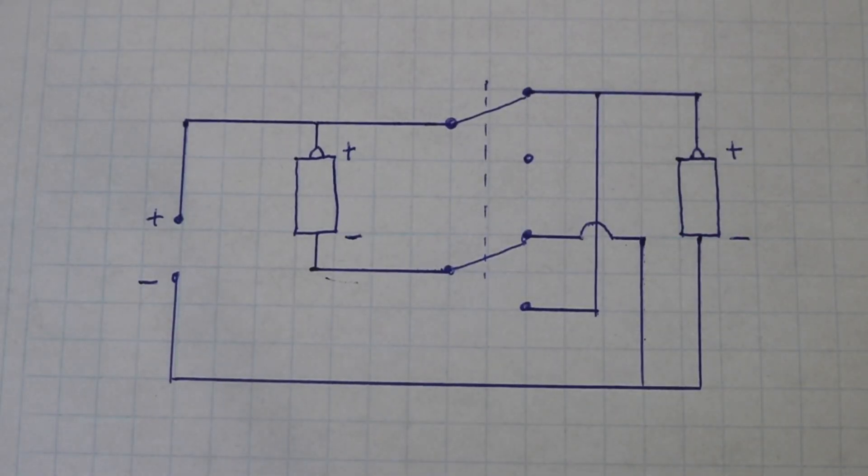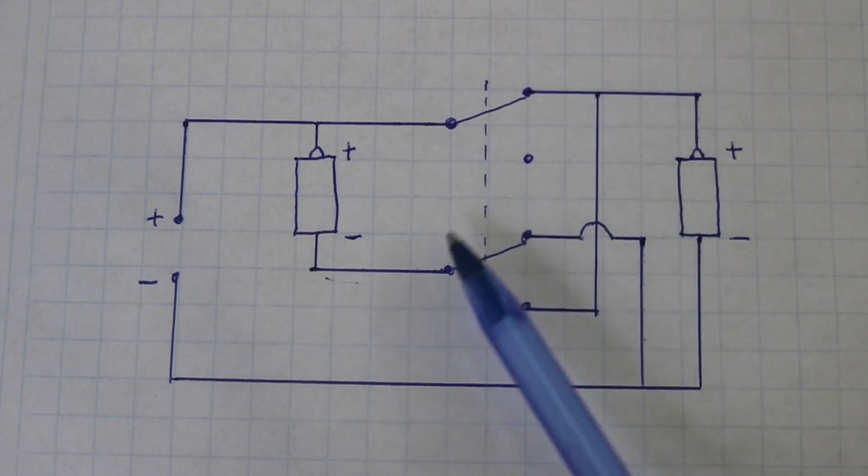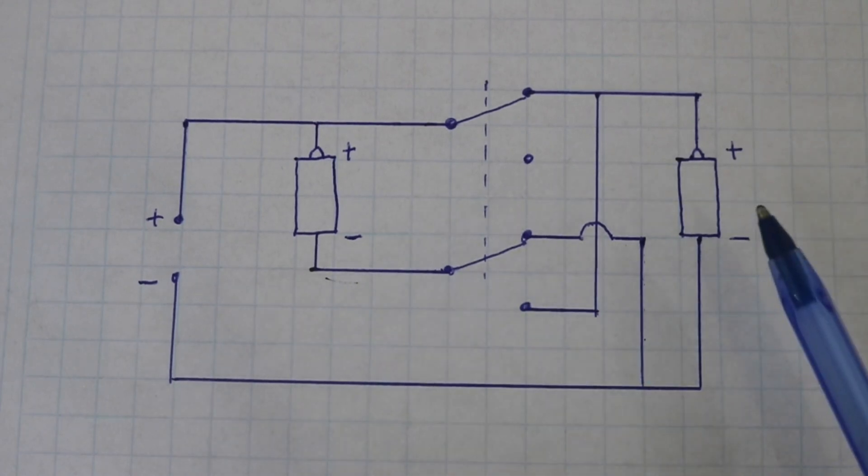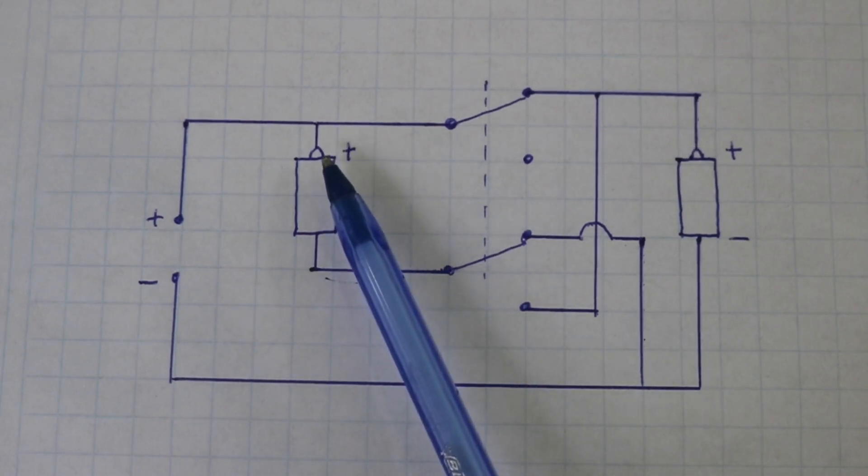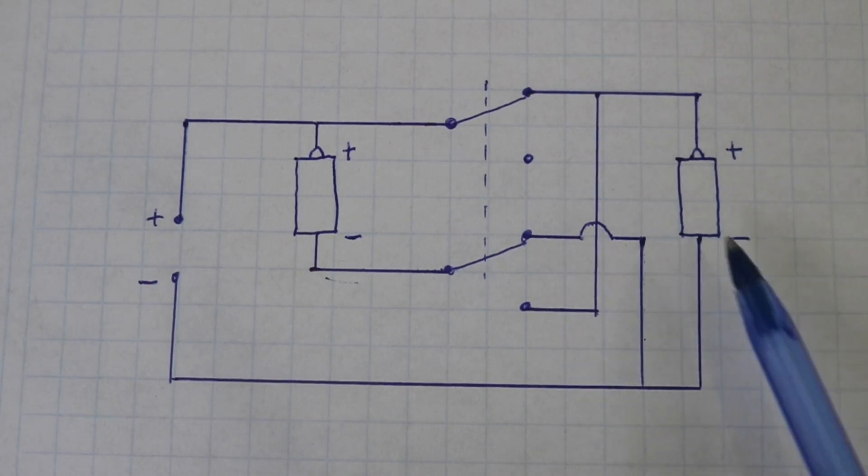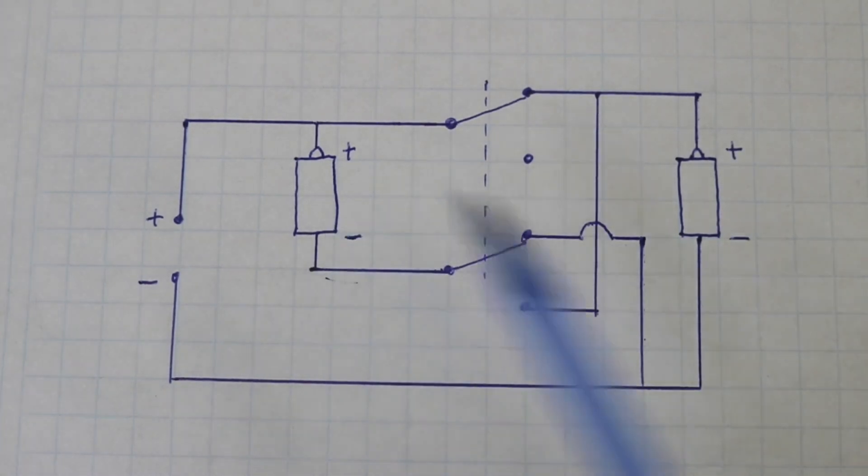Okay, here is the electric diagram, one switch and another switch. In this position the two batteries are connected in parallel. You can see that the positive of this battery goes to the positive of the other and negative goes to negative, and then here we have the output.